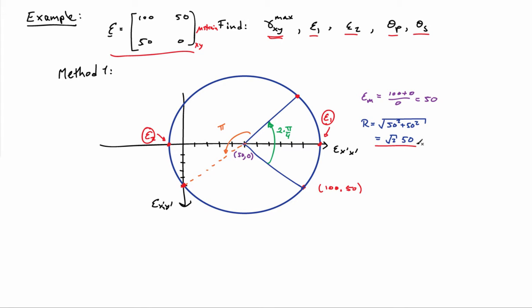50 times root 2. So I can just add that and subtract that to the center value of the circle of 50, and that then gives me what the principal strains are in my system. So the first principal strain then is 1 plus root 2 times 50, and the second principal strain is 1 minus root 2 times 50.